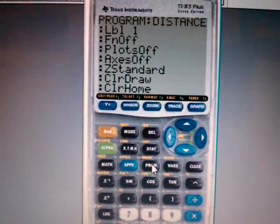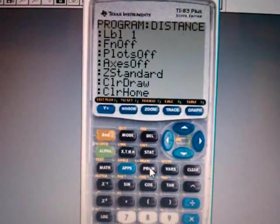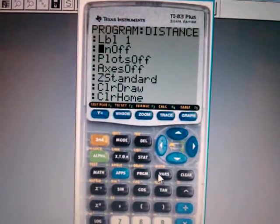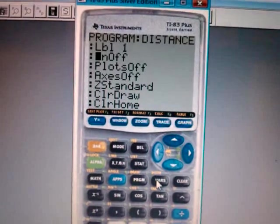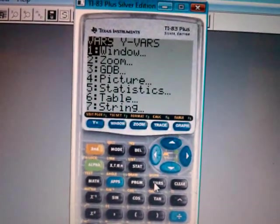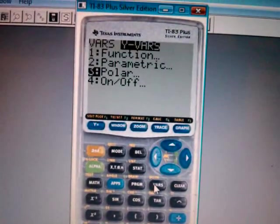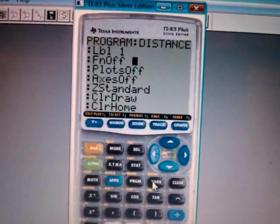Stage label, function off—you have to put that in there to stop it from drawing things. The more complex the program, the more things can go wrong. To get function off, you go to Vars, you go over to Y-vars, and you go down to On/Off, and there's function off.